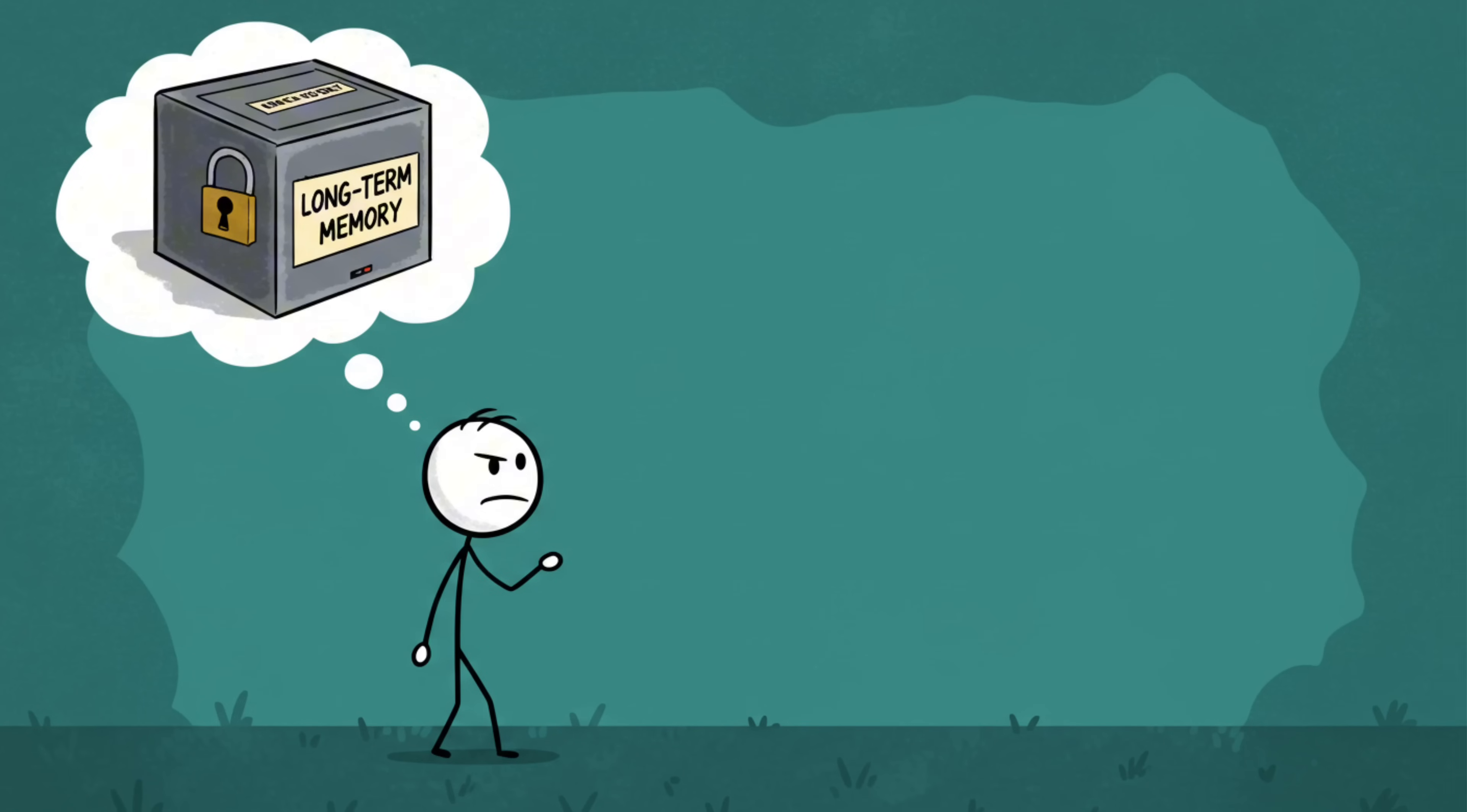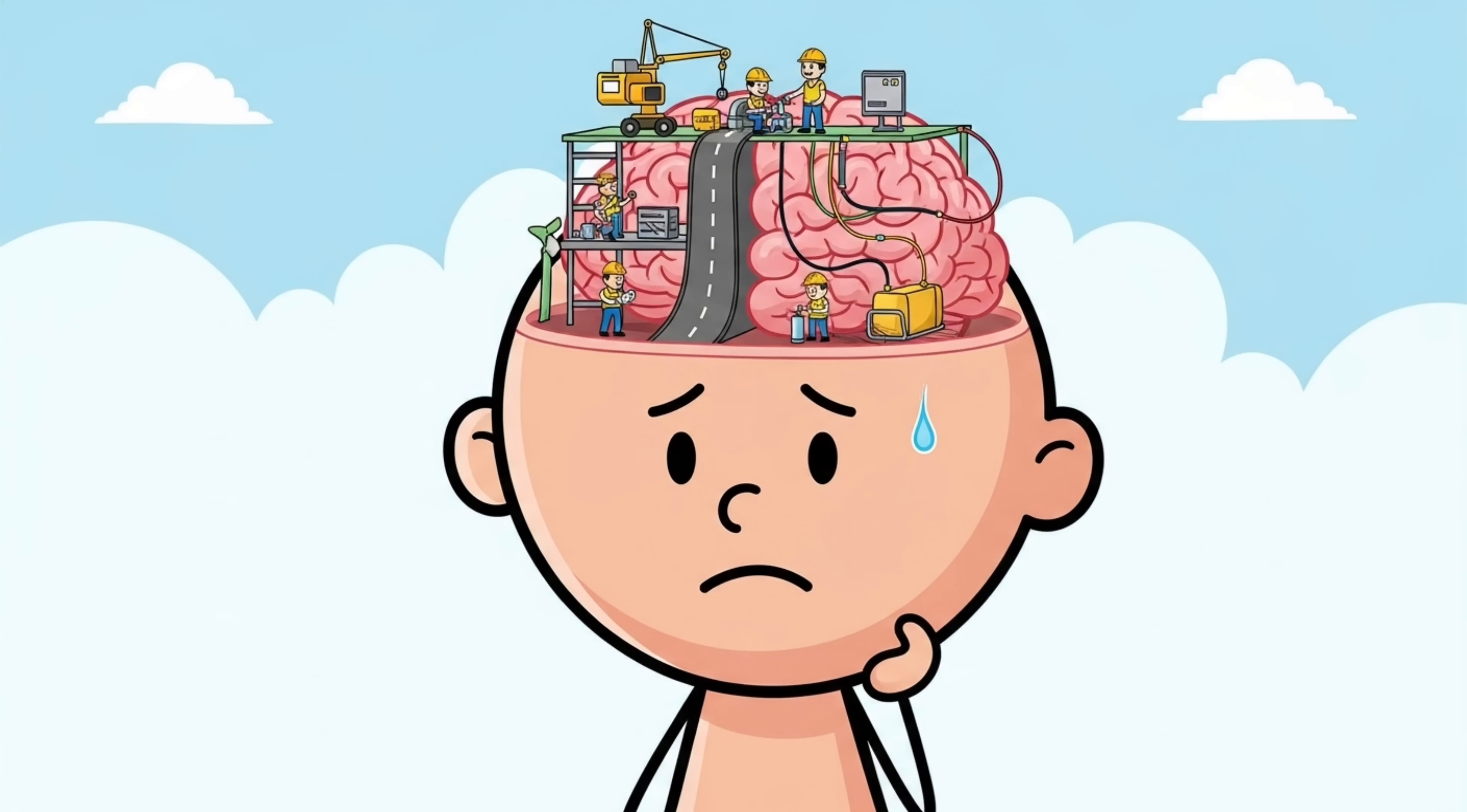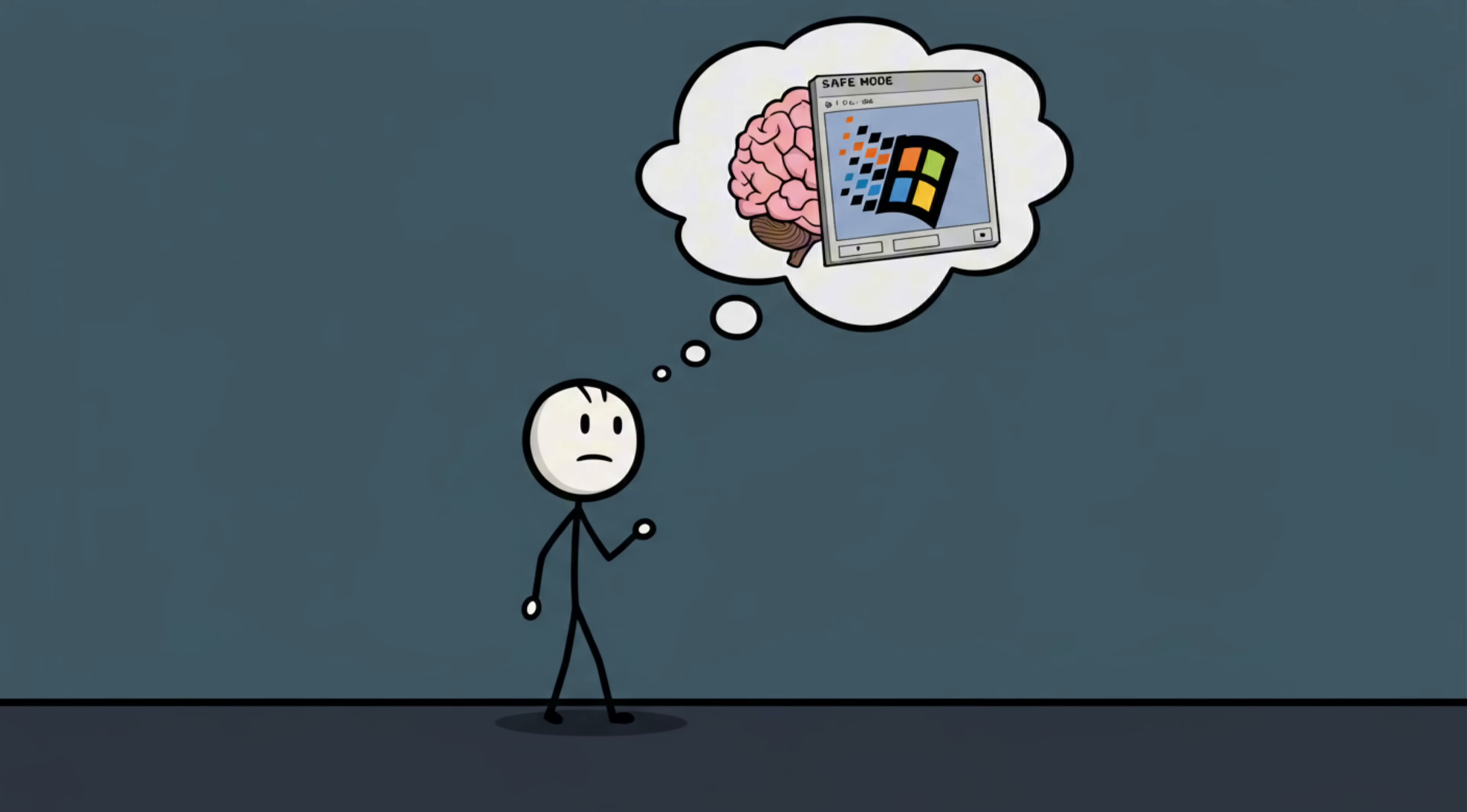The part of your brain that handles long-term memory, the hippocampus, doesn't just magically appear ready to store your memories. It's still busy building itself, forming connections, and learning not to drool on itself. Any memories before about age three are usually wiped because your hippocampus was essentially running on Windows 95 in safe mode.